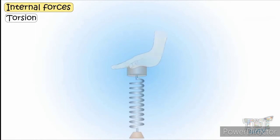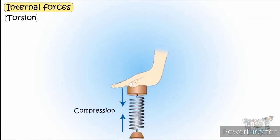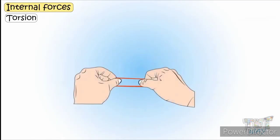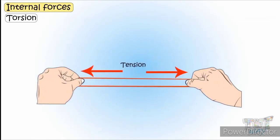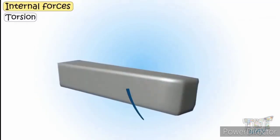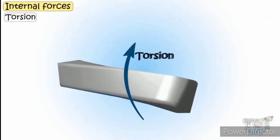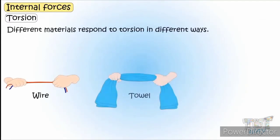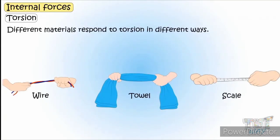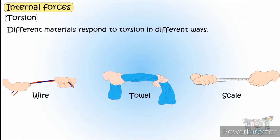Let's look at torsion. While compression is a pressing force and tension is an elongating force, torsion is a squeezing or twisting force. When you squeeze a material, it affects it in different ways — some parts bend and some may break.